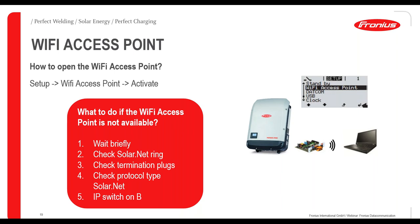If the Wi-Fi access point is not responding: first, wait briefly — especially on first installation, it takes a few minutes after switching on AC for the access point to become available. Second, check the SolarNet ring — verify termination plugs and communication cable are correct. Also check the protocol type of SolarNet. Importantly, check the IP switch (DIP switch) on the data manager — there is position A and position B, and it must be set to position B for the Wi-Fi access point to be available.